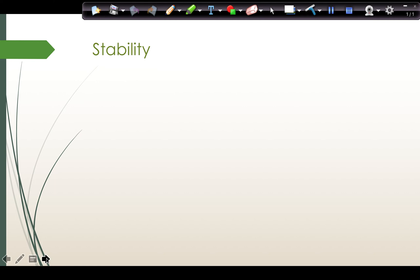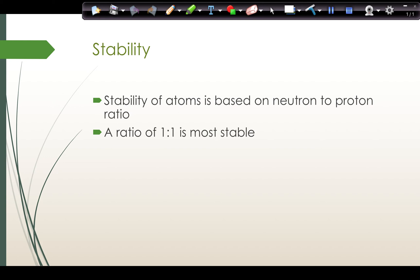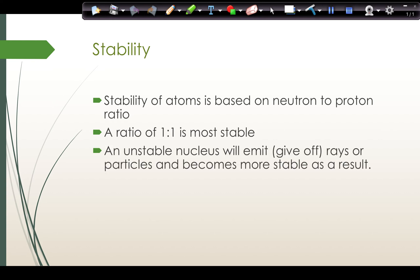The first thing that we talk about in nuclear chemistry is stability. Some atoms are stable and other atoms are not stable. Stability is based on the neutron to proton ratio. A ratio of one neutron for every one proton is the most stable for a nucleus. An unstable nucleus will emit, which means give off rays or particles. When it does this, it will become more stable as a result. Anything that is unstable will spontaneously decay in a natural reaction and give off something like alpha particles, beta particles, positrons, or gamma rays.